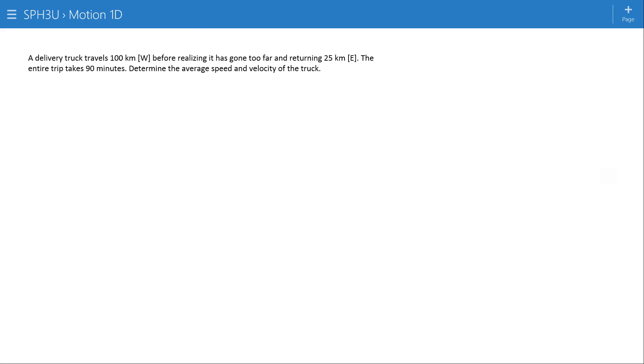So let's look at a simple example here that should illustrate the difference between the two things. A delivery truck travels 100 kilometers west before realizing it's gone too far and returns 25 kilometers east. The entire trip takes 90 minutes. Determine the average speed and velocity of the truck.